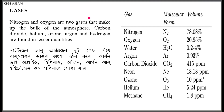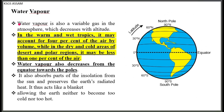Water vapour is a variable gas in the atmosphere, constituting 0.2 to 4% of the air. It decreases with altitude. In the warm and wet tropics it may account for 4% of the air by volume, while in dry and cold areas of desert and polar regions it may be less than 1%. Water vapour also decreases from the equator towards the poles.